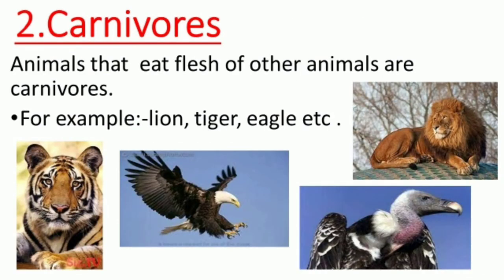Number two: Carnivores. Animals that eat flesh of other animals are called carnivores. Children, jo animals doosre animals ka flesh, yaani gosht khaate hain, unhe hum bolte hain carnivores. Jaisi lion, tiger, eagle — yeh sab doosre animals ki flesh, yaani gosht ko khaa ke zinda rehte hain. To inhe hum carnivores kehte hain.